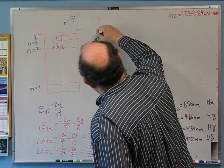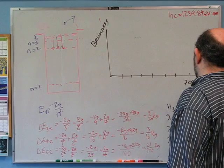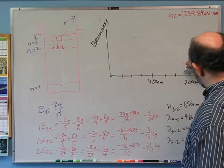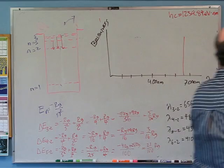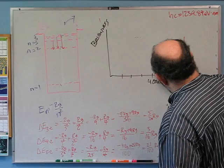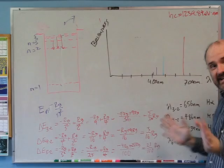If I plot brightness versus wavelength, with 700 nanometers on the right and 400 nanometers on the left, I know there's going to be a very bright line at 656 nm. Then a line at 486 nm, another one at 434 nm, and another one at 410 nm. So those are the peaks you would see if you plotted brightness versus wavelength — you will actually see this in lab next week.